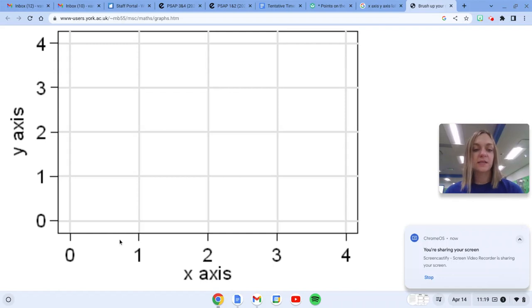When you plot points, the x number always goes first. This is the x-axis, left and right. The y number comes second. The y-axis goes up and down.